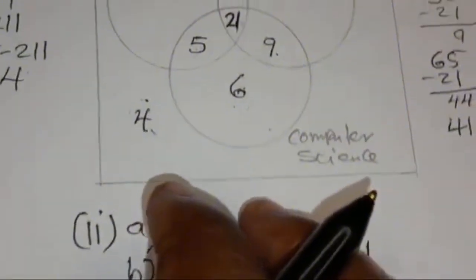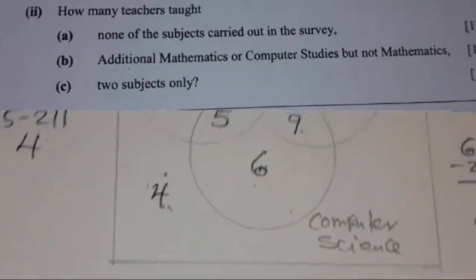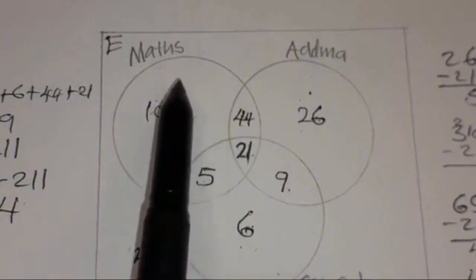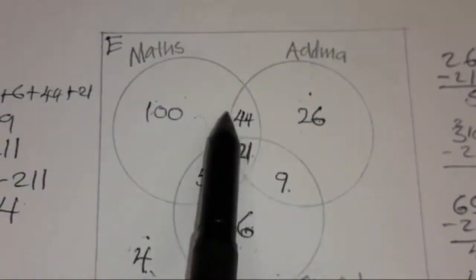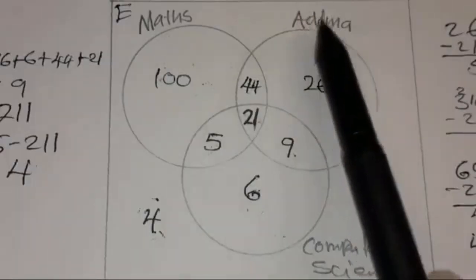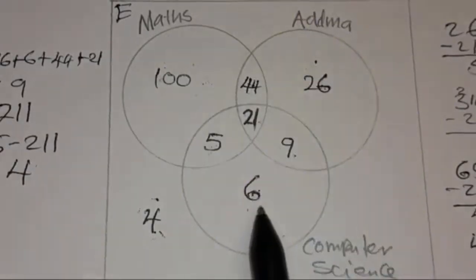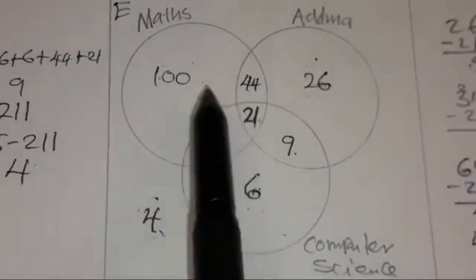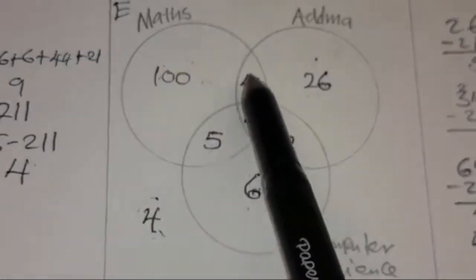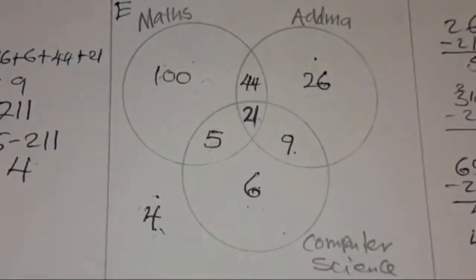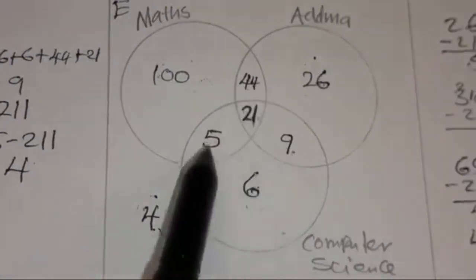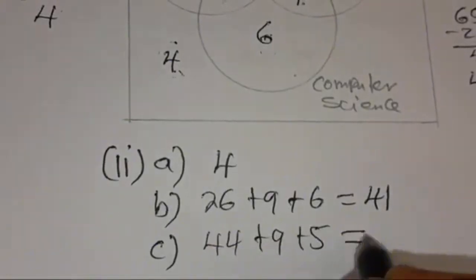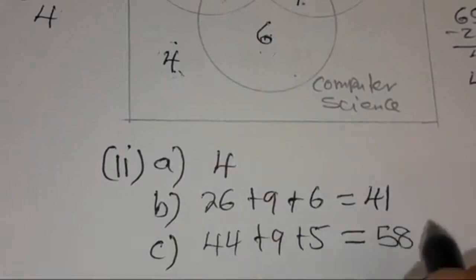Part C: how many teachers taught exactly two subjects? We want those on the intersection of exactly two sets. The intersection of Maths and ADMA only is 44, ADMA and CS only is 9, and Maths and CS only is 5. Adding these: 44 plus 9 plus 5 gives 58 teachers.